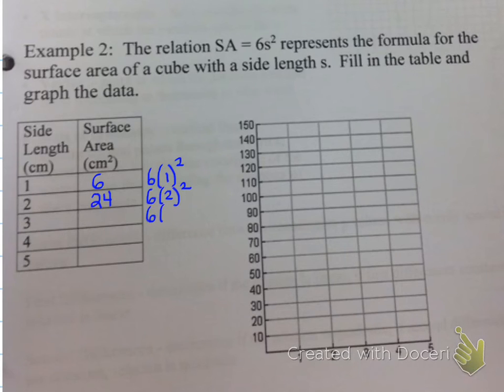We do it again, 6 times 3 squared, 6 times 4 squared, 6 times 5 squared. The idea is the exponent gets the number inside the bracket, gets the exponent, and then we multiply by 6. And you should get these values. 6 times 3 squared, which is 6 times 9, which is 54. 6 times 4 squared, which is 6 times 16, which is 96. And 6 times 5 squared, which is 6 times 25, which is 150.